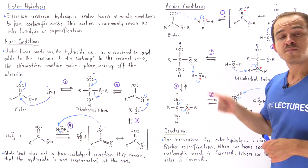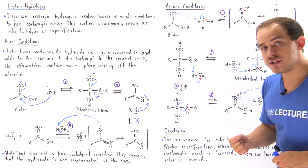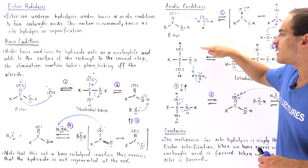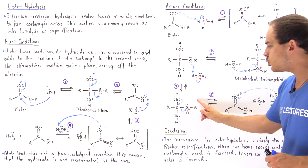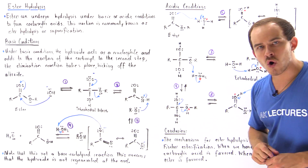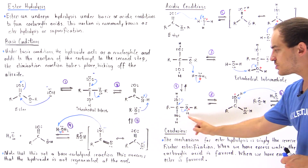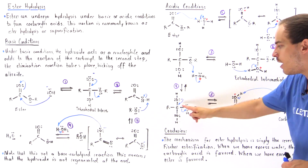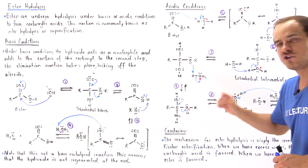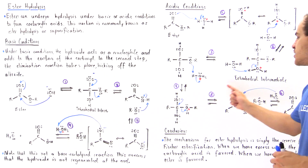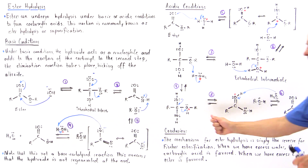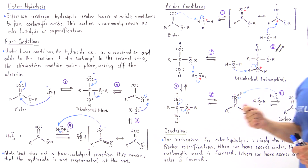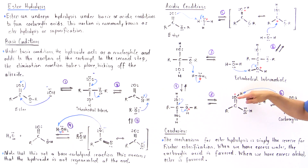In step number four, this same hydronium will protonate the oxygen of this alkoxide, transforming this poor leaving group into a much better leaving group — our alcohol. Once we create this good leaving group, this oxygen can close up a pi bond and kick off this good leaving group. We form our alcohol as well as this protonated carboxylic acid. In the final step, a water molecule takes off the H off of this oxygen, forming the final product, our carboxylic acid, as well as our hydronium molecule.